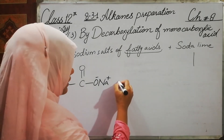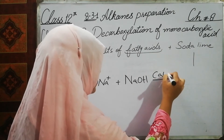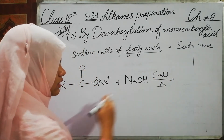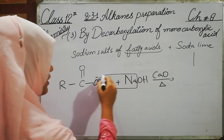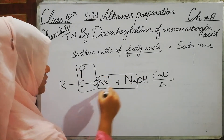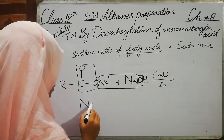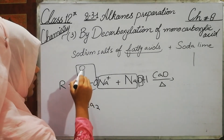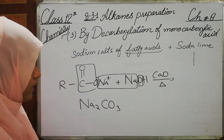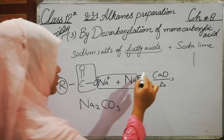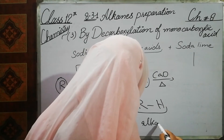We then react the sodium salt with soda lime, which is sodium hydroxide and calcium oxide. As a result, we get Na2CO3 — sodium carbonate — and the rest is R and H, which gives us the alkane.